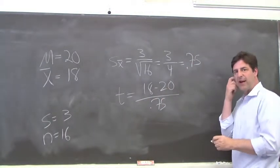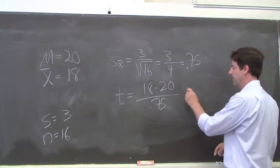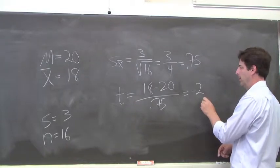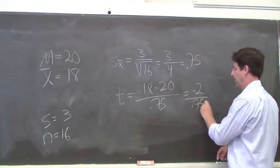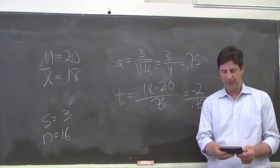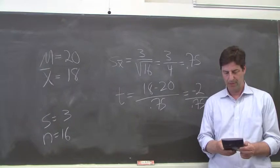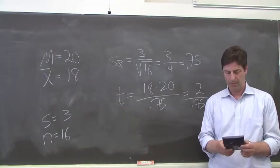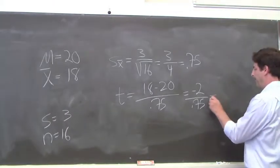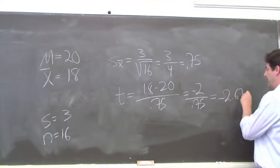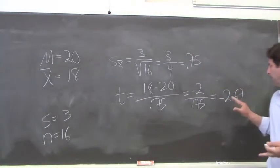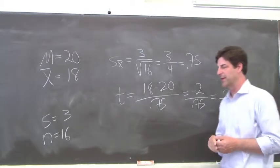So 18 minus 20 divided by 0.75, and we get negative 2 divided by 0.75 is negative 2.67. Our calculated t-value is negative 2.67.